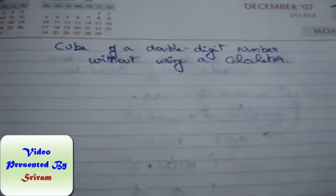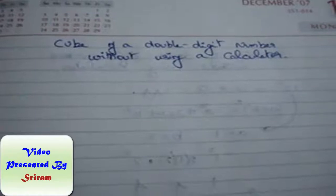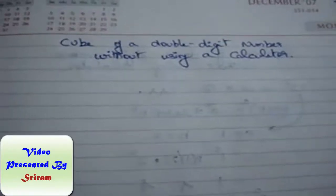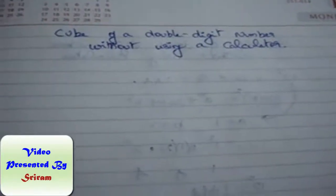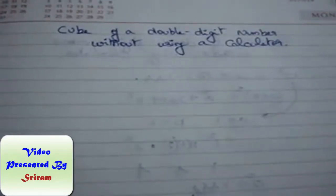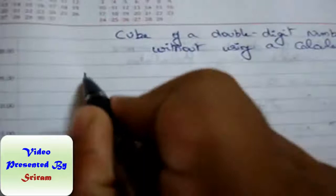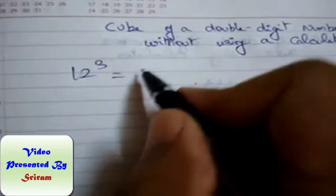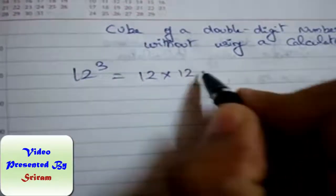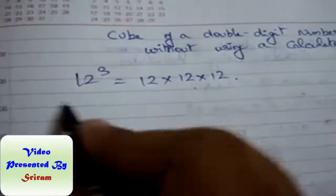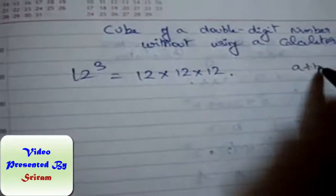Hello, good day. Now let us see cubing of a double-digit number without using a calculator. Let us take first example as 12 cube. 12 cube is 12 into 12 into 12. We always know (a + b) whole cube.